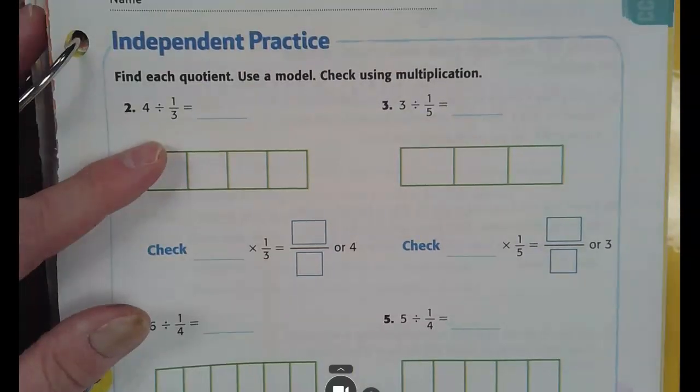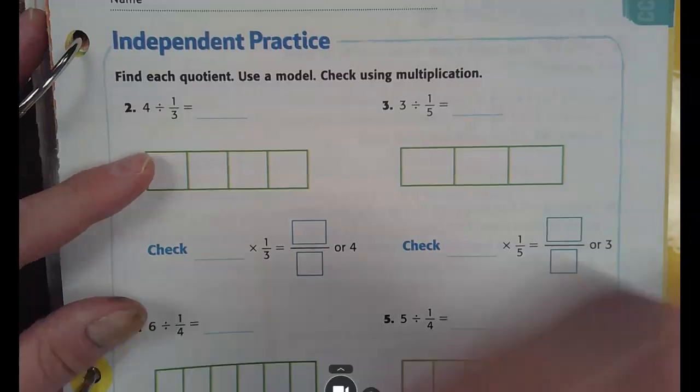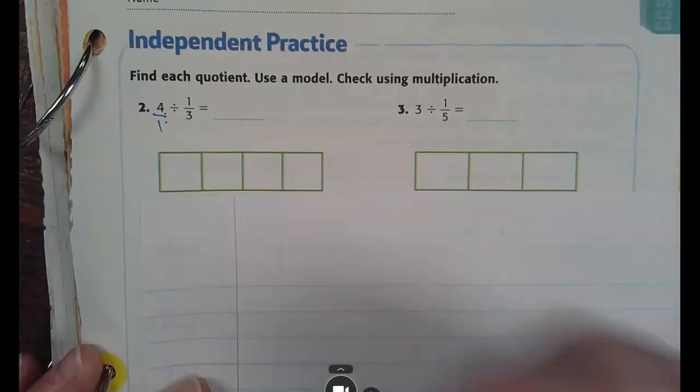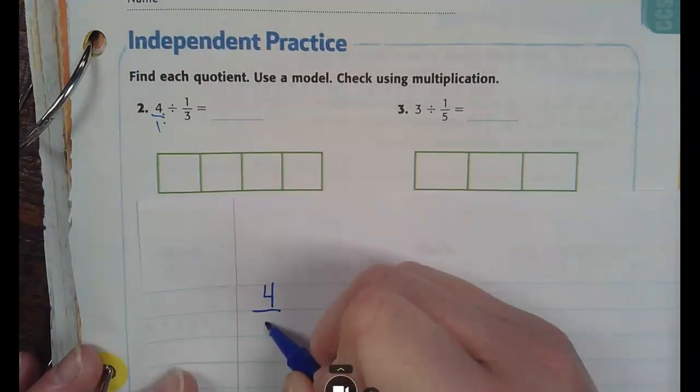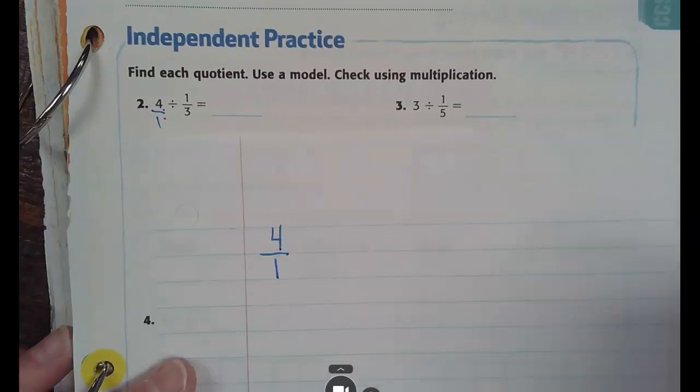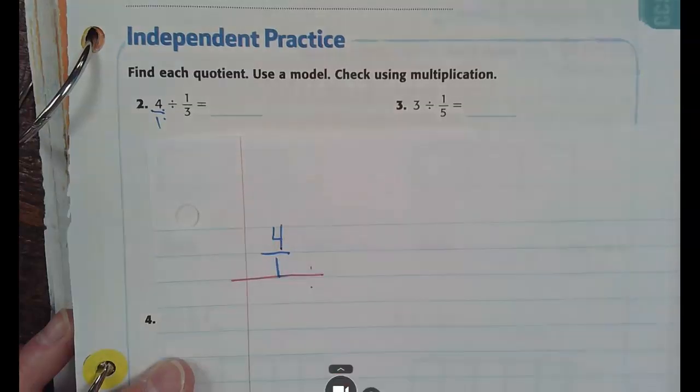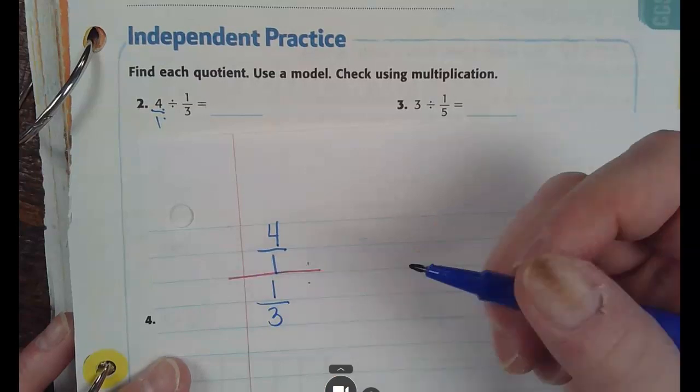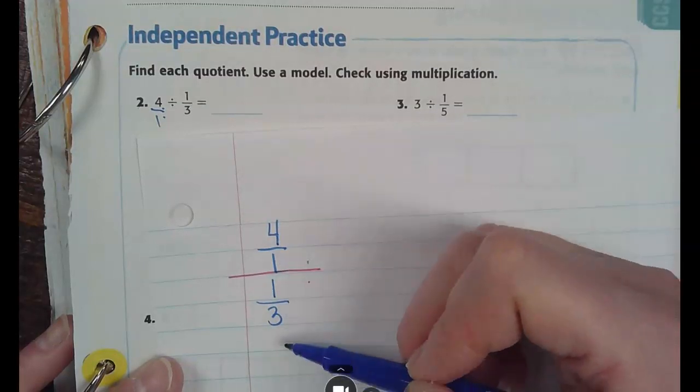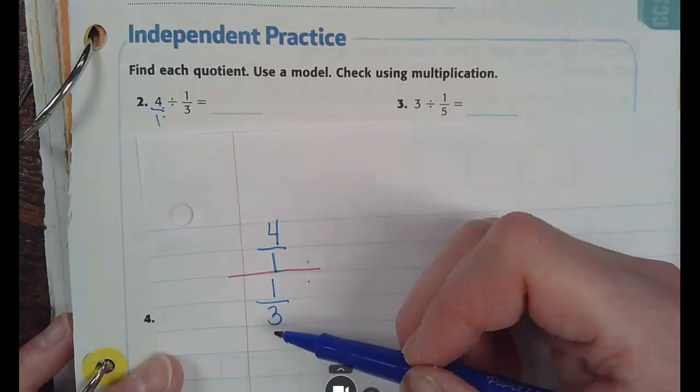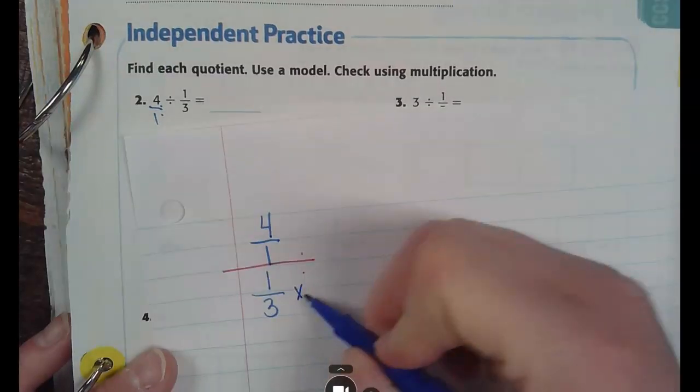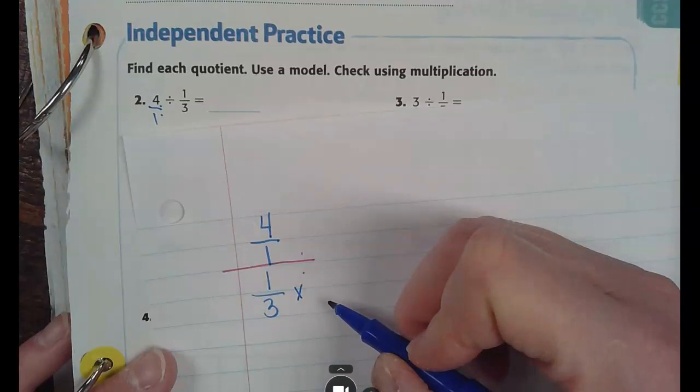So, when I see a 4, what do I have to remember to put it over? 1. Why? Because 4 divided by 1 is still the same as 4. So, number 2, I have 4 divided by 1 and then I have to divide it by 1 third. Can I divide 4 by 1 divided by 1 divided by 3? No. So, what do I have to do? Multiply by the reciprocal times 3 over 1. You were right.